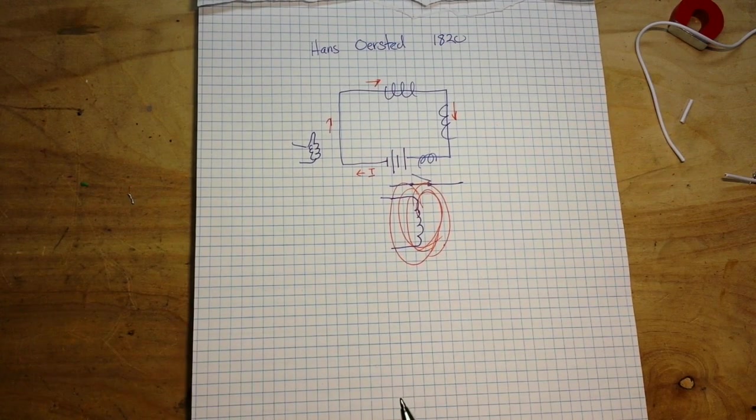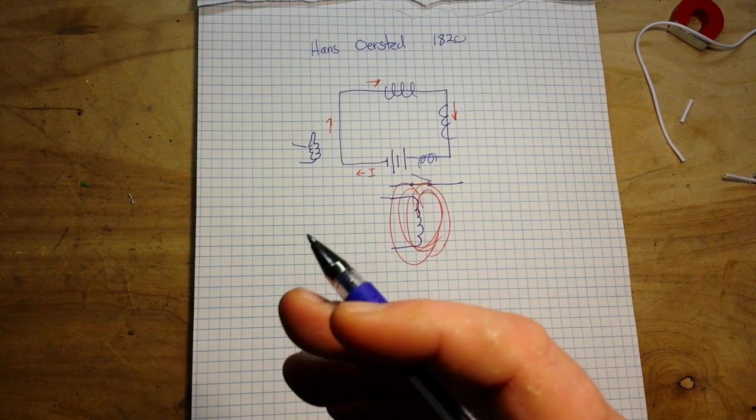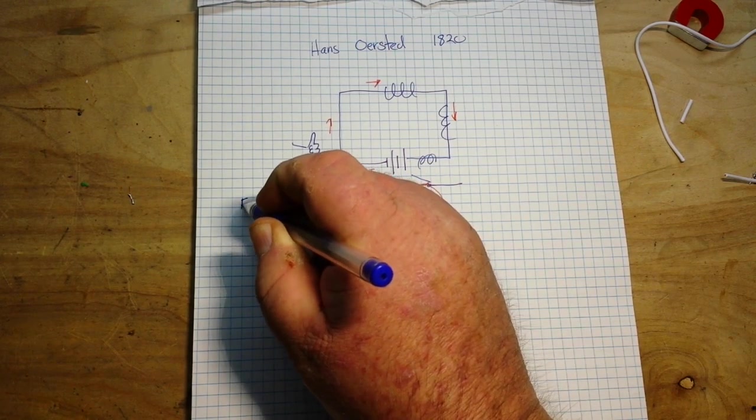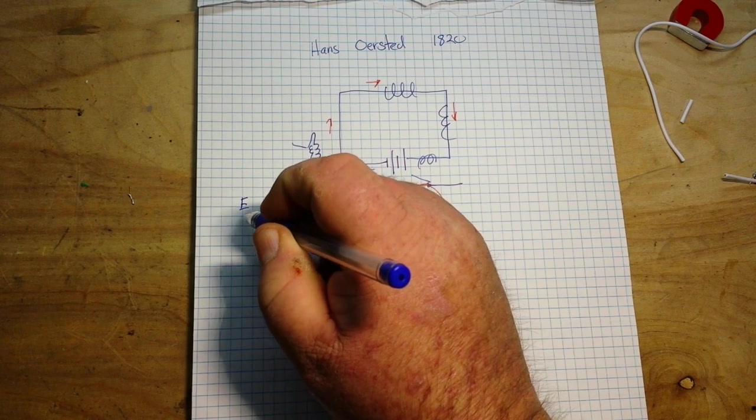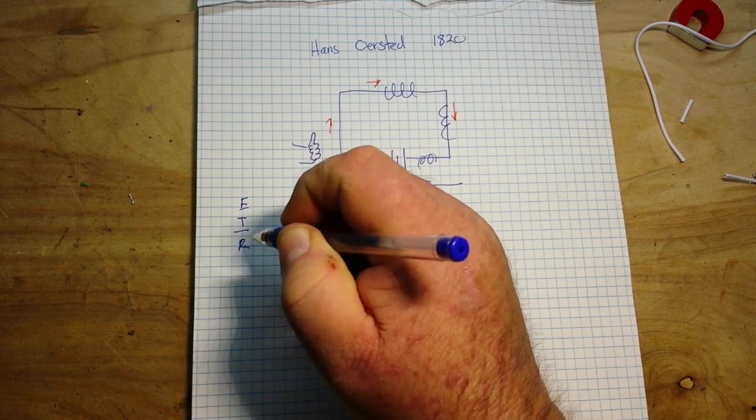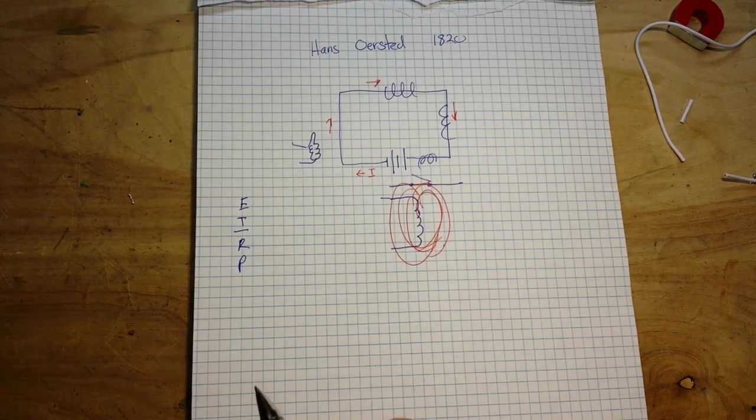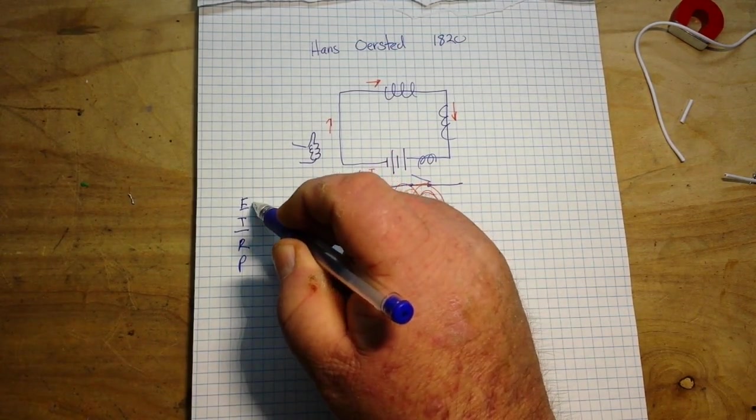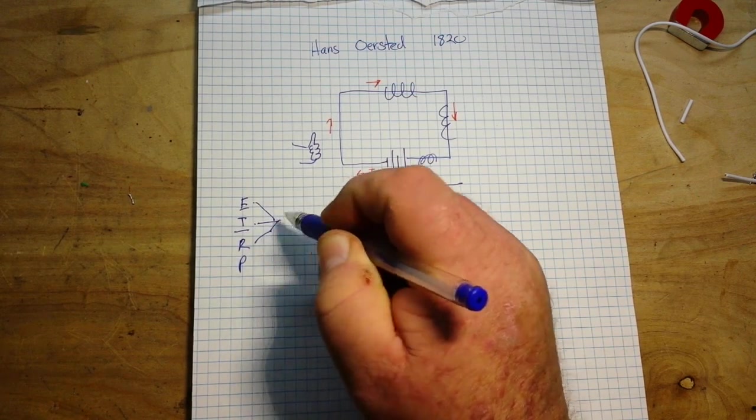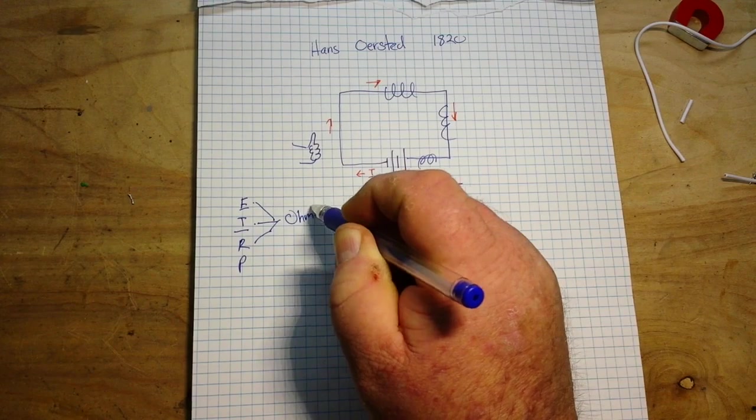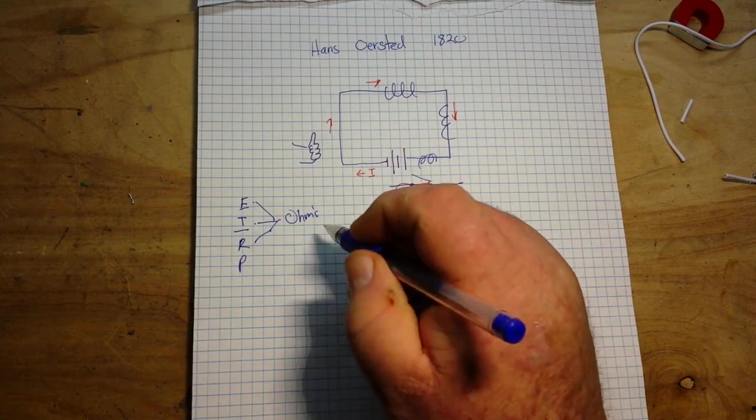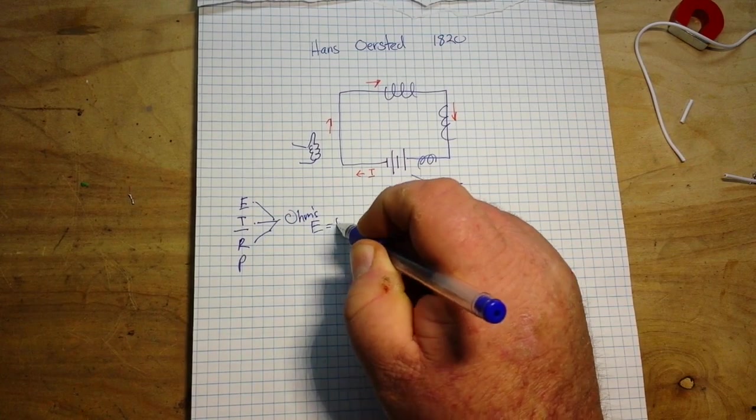If we want to talk about electricity, because we have to talk about them together, there's just no way around it. We have voltage, we have current, we have resistance, and we have power. Now voltage, current, resistance are all related to each other through Ohm's law. I mean you know that, it's quite simple, you know E equals IR.